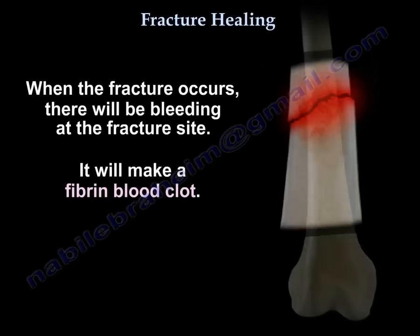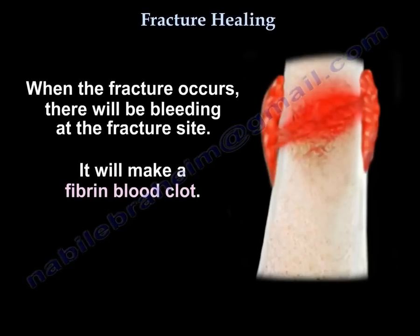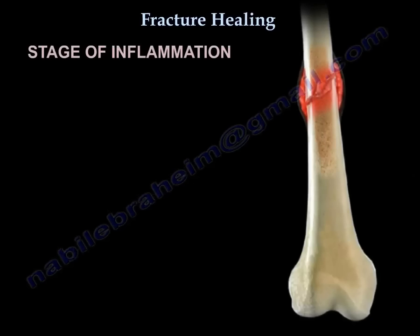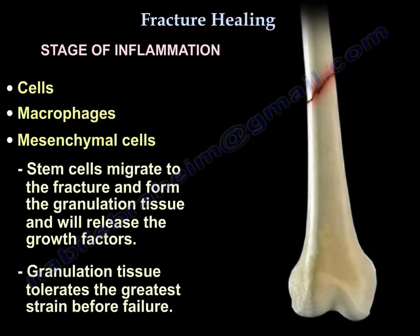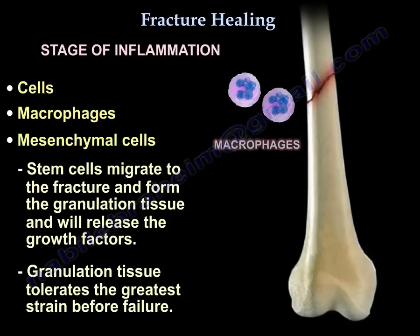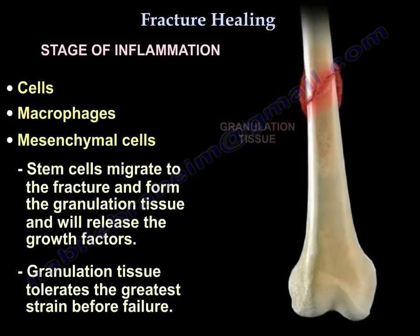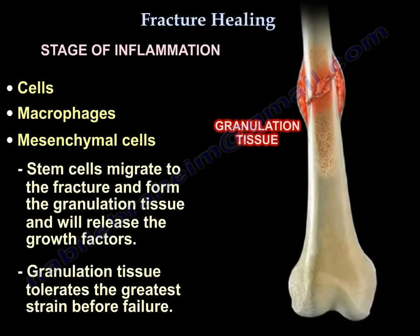When the fracture occurs, there will be bleeding at the fracture site, which will make a fibrin block clot. Then the stage of inflammation comes. The cells — macrophages, mesenchymal cells, and stem cells — migrate to the fracture and form the granulation tissue, releasing growth factors. The granulation tissue tolerates the greatest strain before failure.